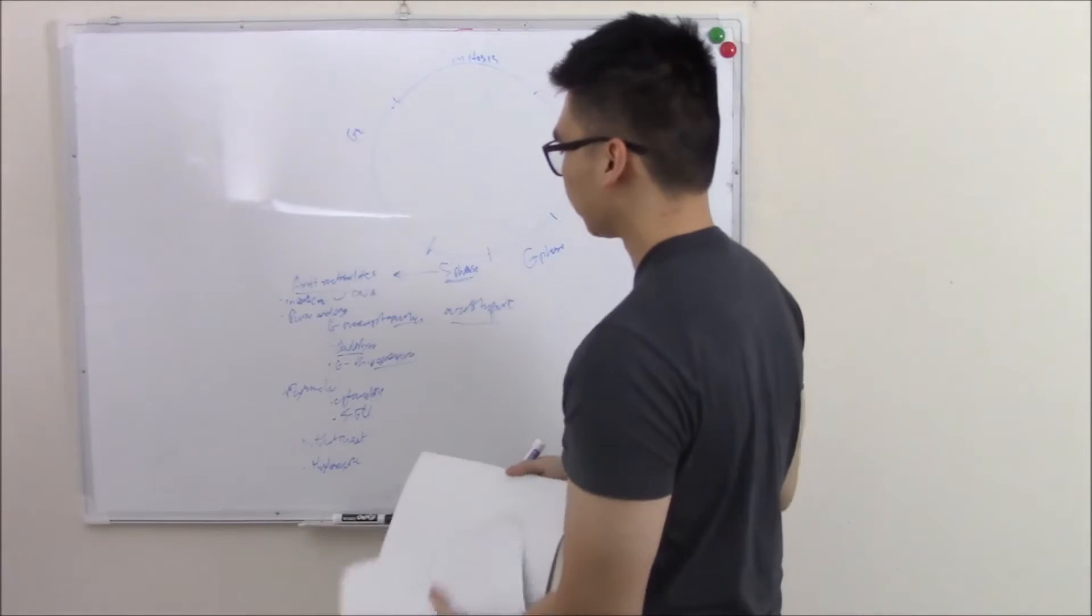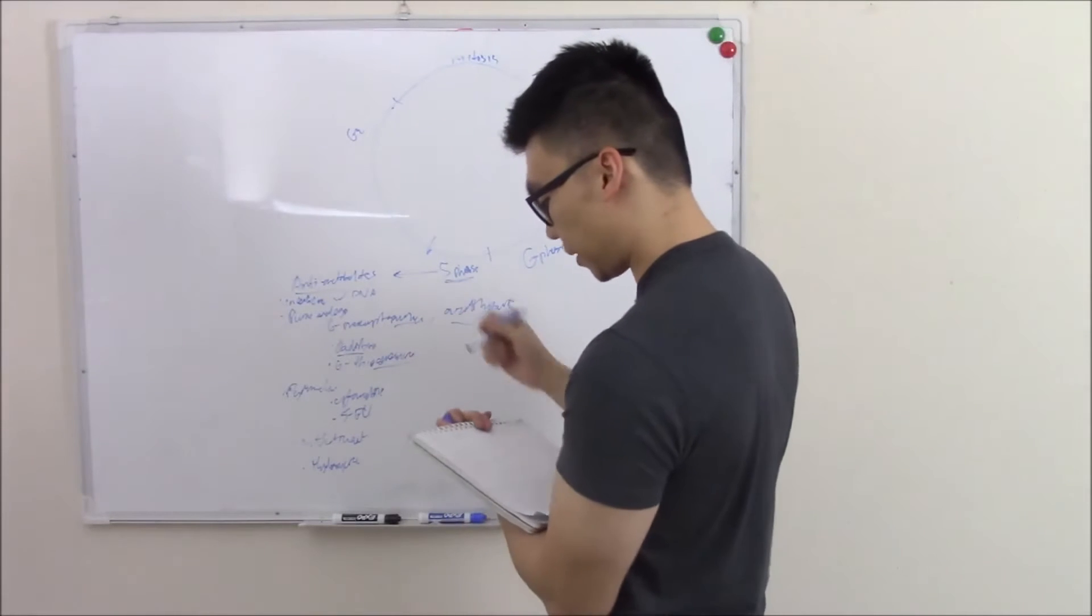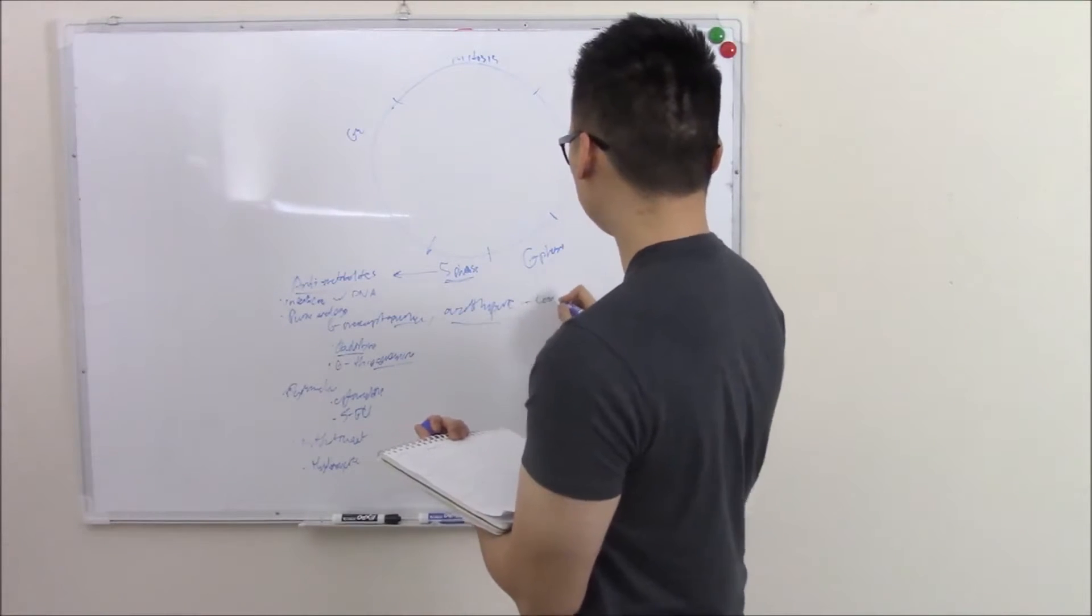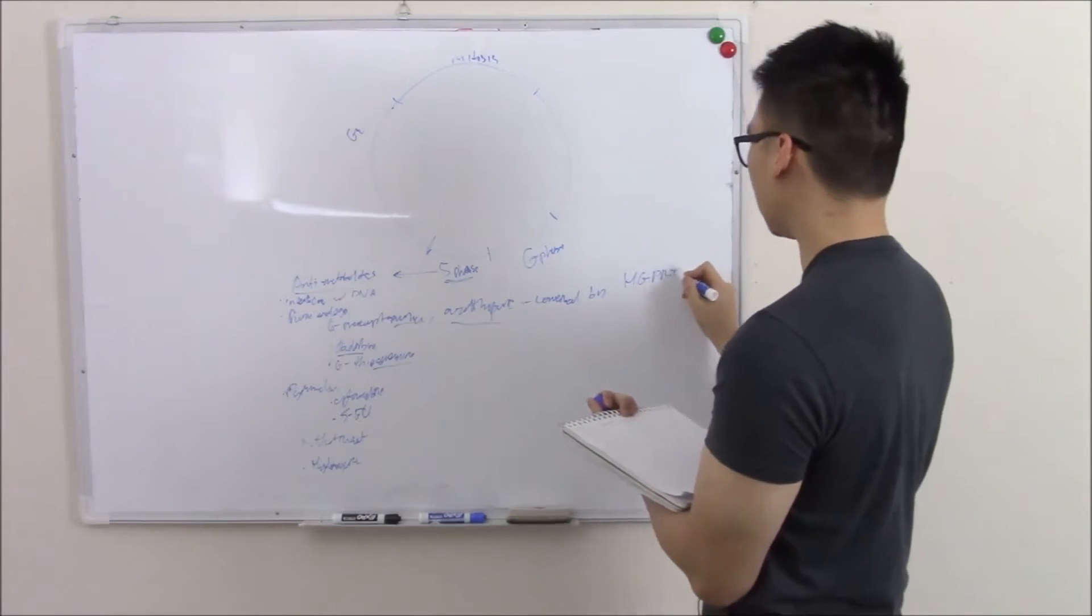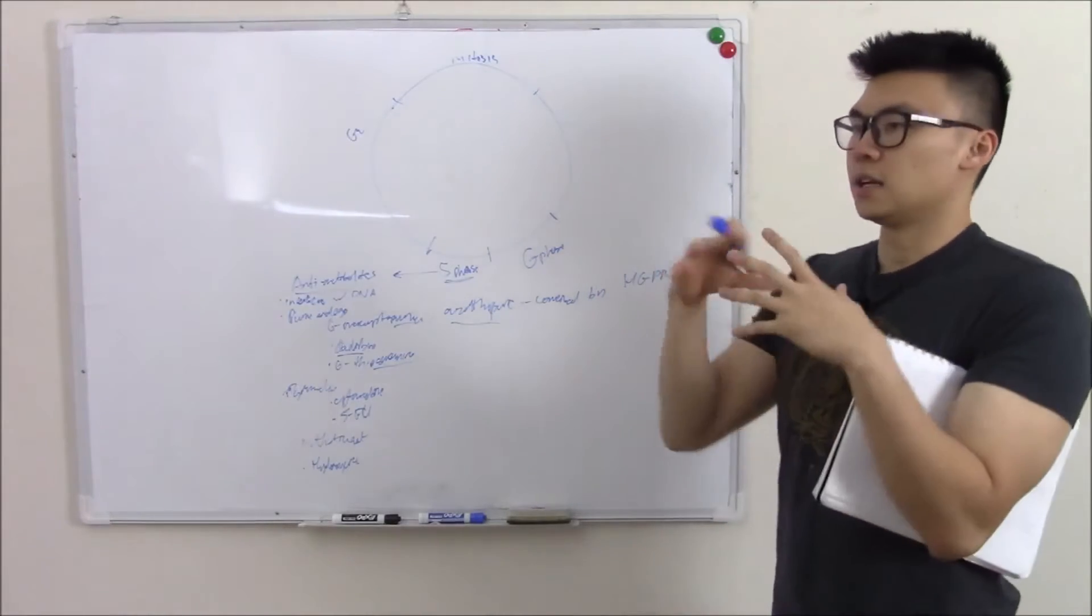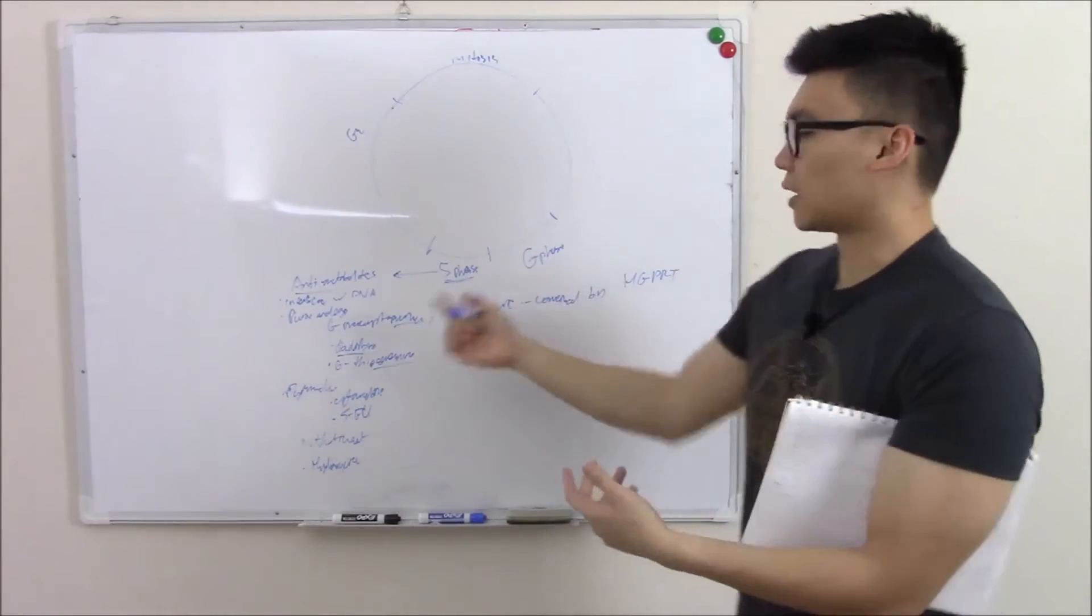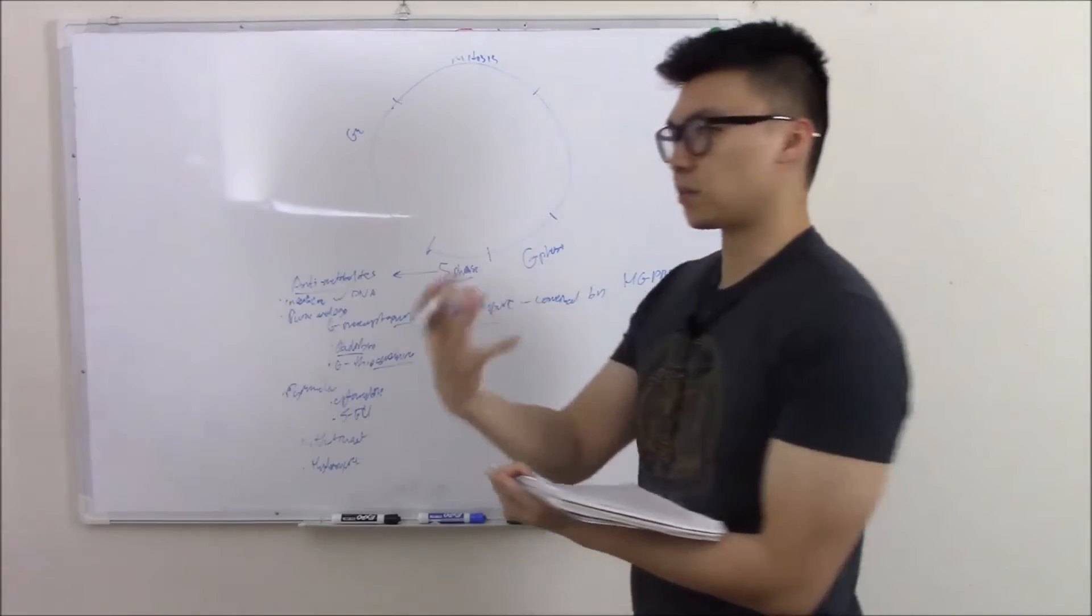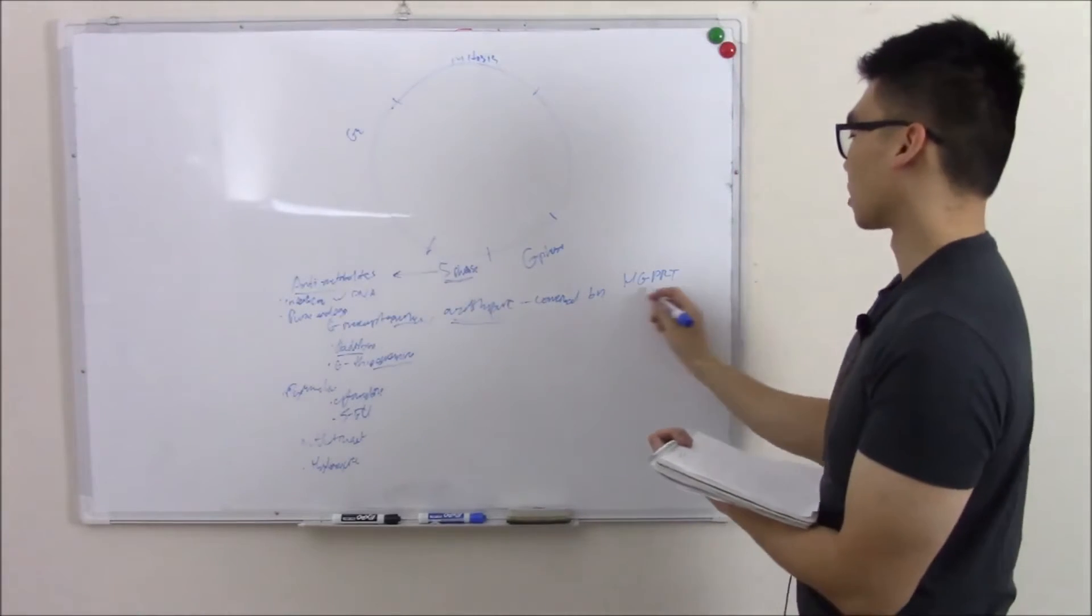If we start with our purine analogs, we'll start with 6-MP. 6-MP needs to be converted by HGPRT. If you were here for my Biochem videos, you know that HGPRT recycles purines. It's for a purine salvage pathway, so it recycles purines. So it also activates 6-MP. Azathioprine is just a pro-drug, it'll eventually become 6-MP and then also get worked on by HGPRT.